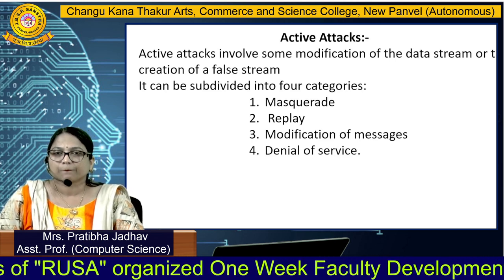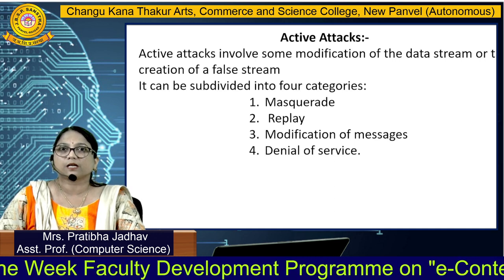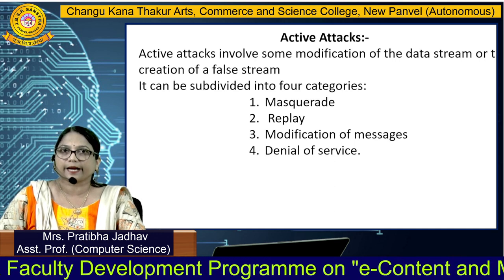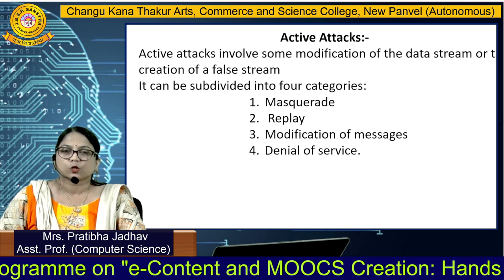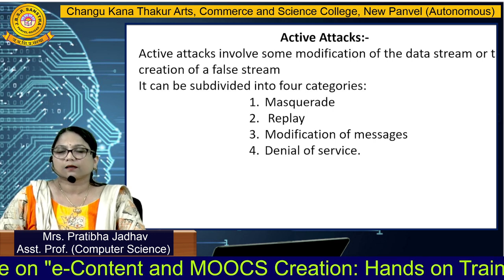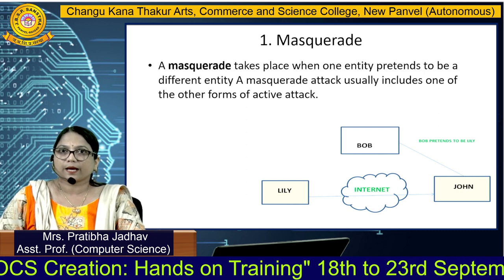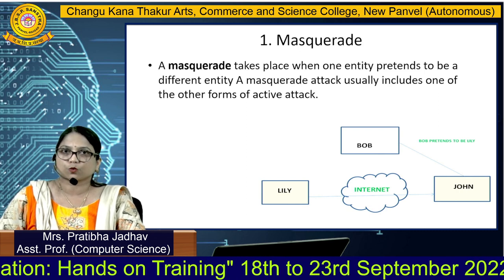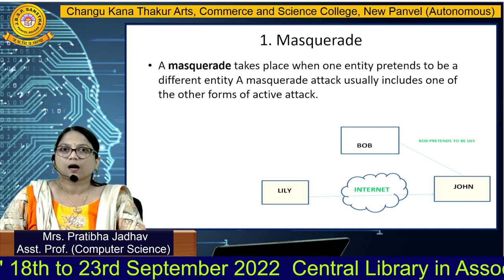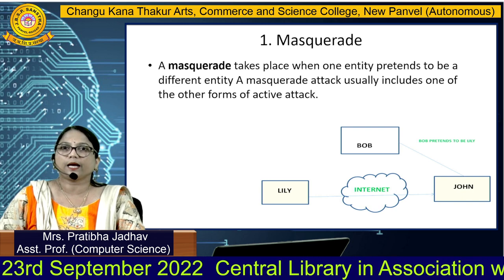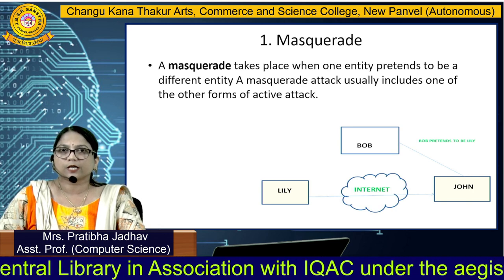Next is active attack. In active attack, there are different categories involving modification of data and creation of false streams between sender and receiver. These four categories are masquerade, replay, modification, and denial of service. A masquerade takes place when one entity pretends to be a different entity.